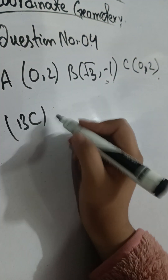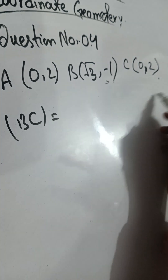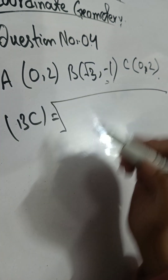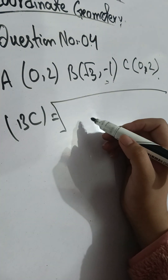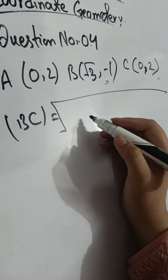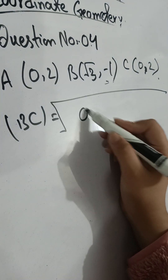Now we will find the distance BC. However, the BC and AC calculations will now be solved step by step.